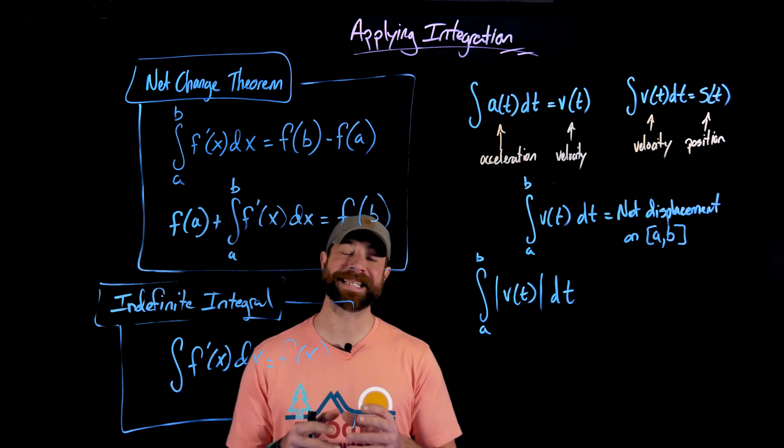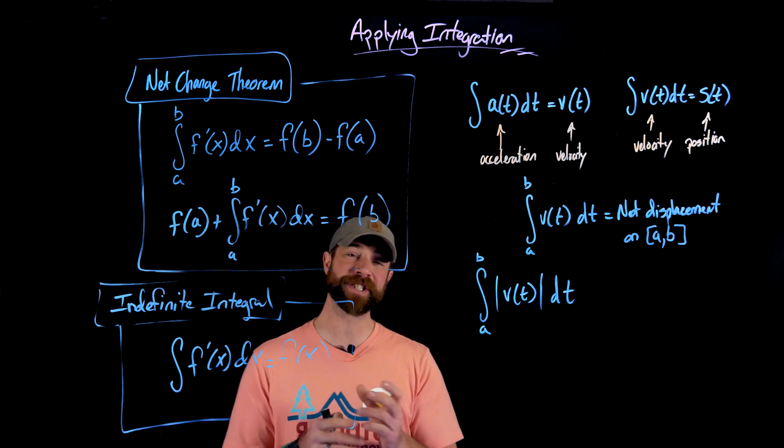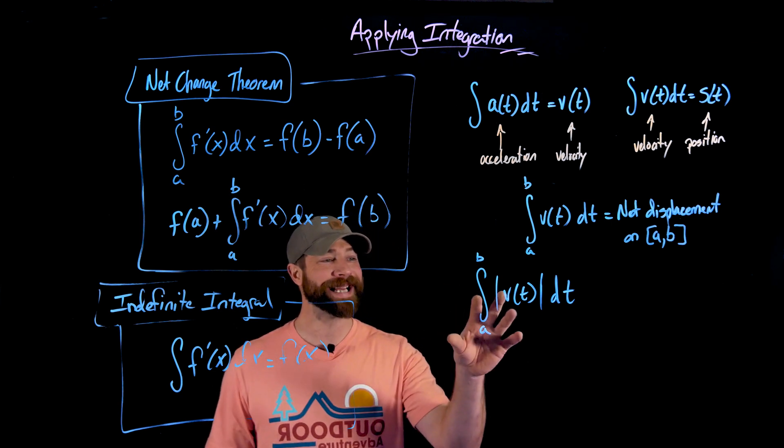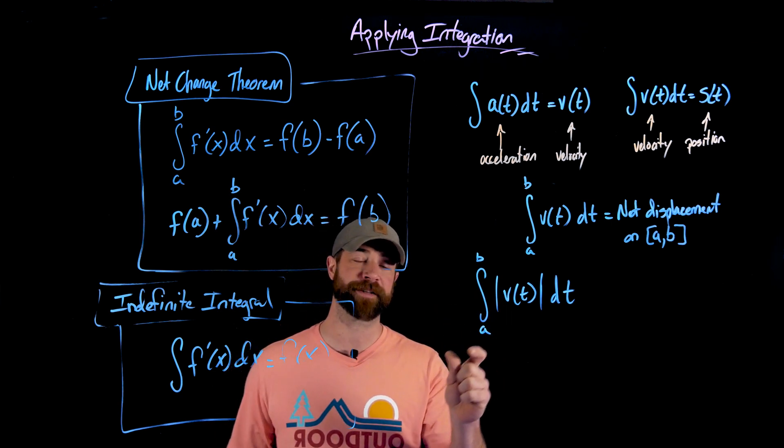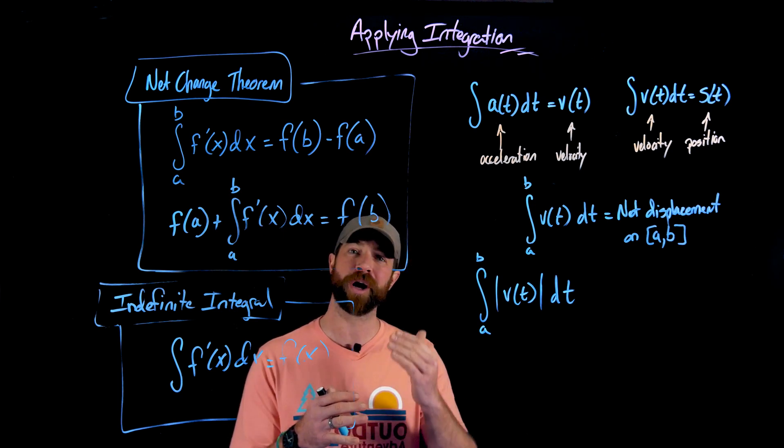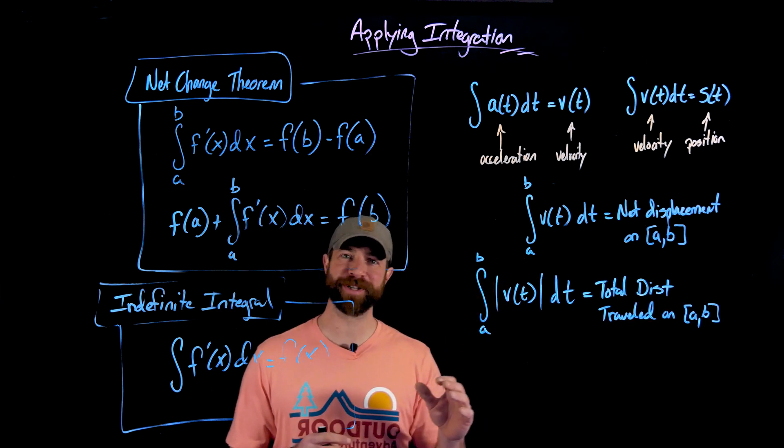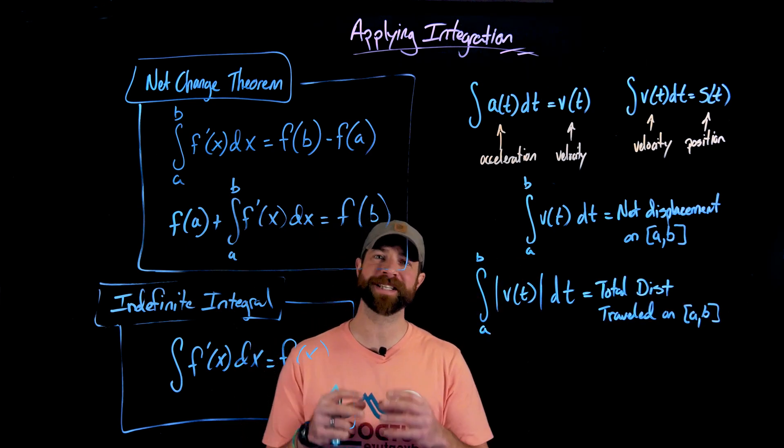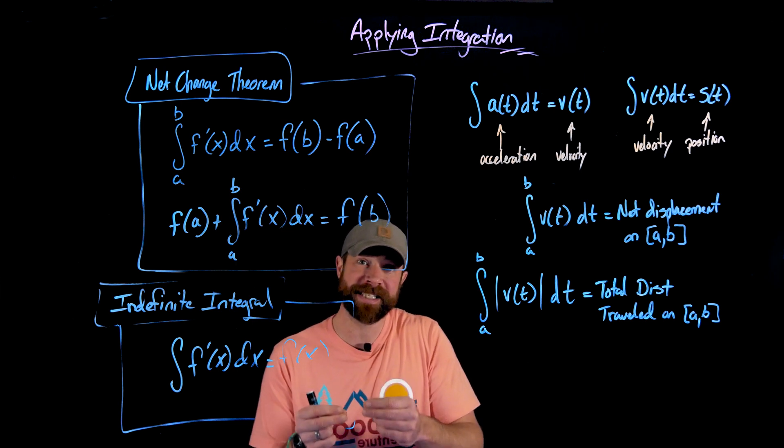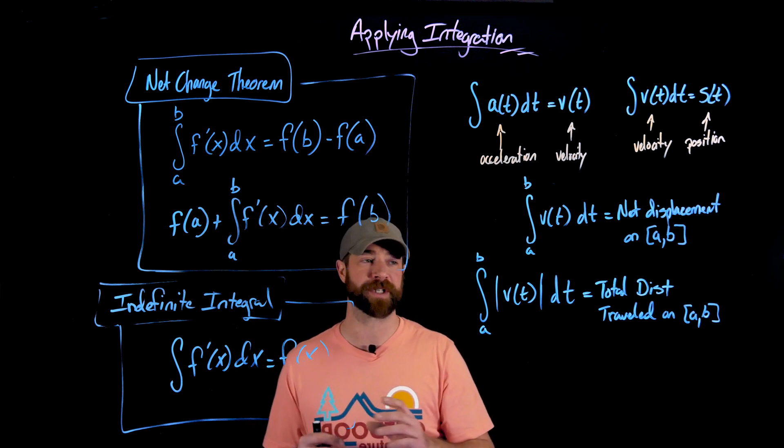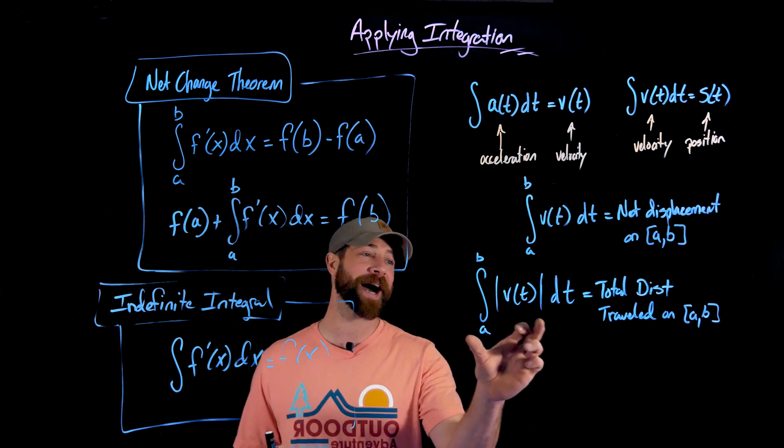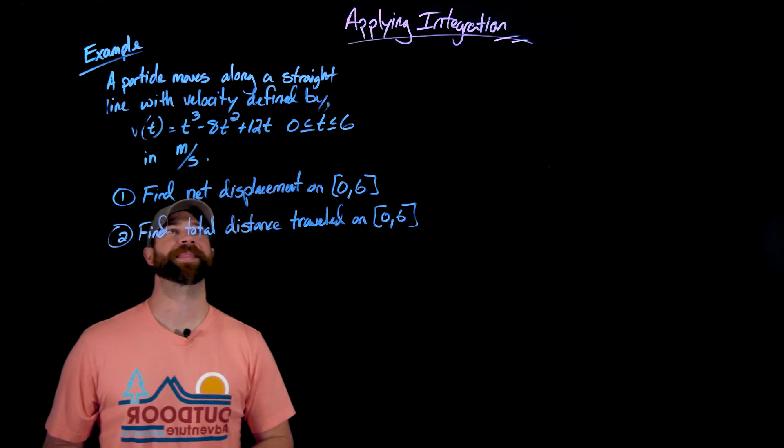Then if we integrate the speed function, and the speed function, by the way, is always just the absolute value of the velocity function. The only difference between speed and velocity is this idea of direction. If we integrate the speed function or the absolute value of the velocity function, we won't get this displacement. We actually will get out the value of the total distance traveled on the interval a, b. And these descriptions of the net displacement and total distance obviously come from the fact that we're using a velocity function. But let's do an example here with this idea of net displacement and total distance, just so we get an idea, especially of how to deal with these absolute value integrals.